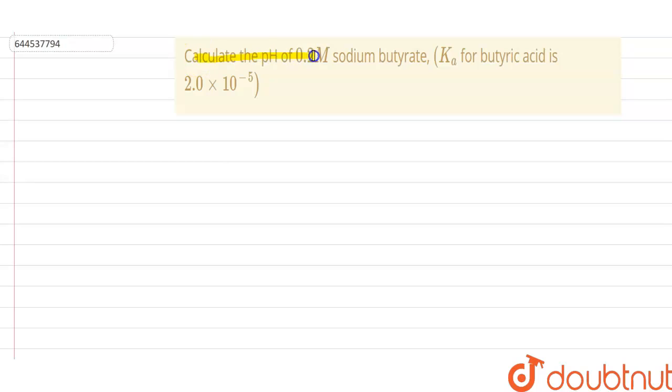Hello, so our question is calculate the pH of 0.2 molarity sodium butyrate which is a salt of the strong base and weak acid. Here the Ka value is given, that is acid dissociation constant is 2 multiplied by 10 to the power minus 5. So we have to find the pH value.